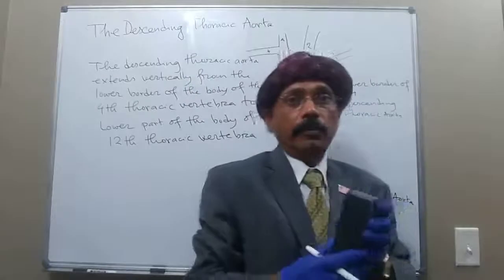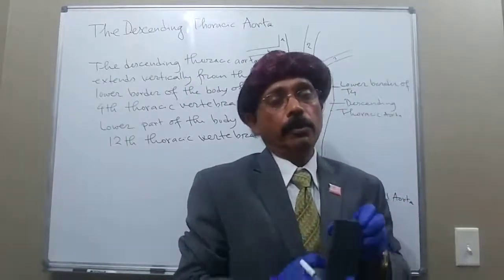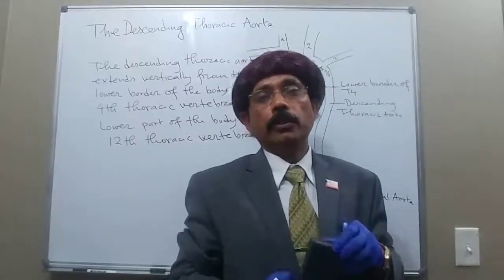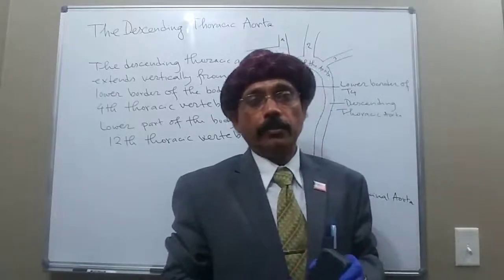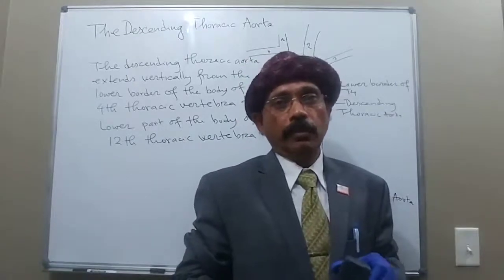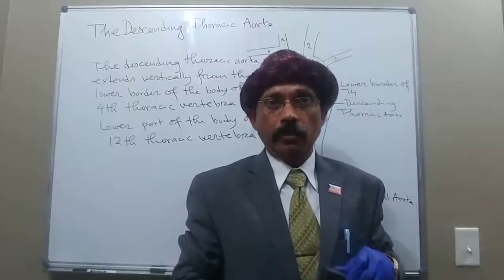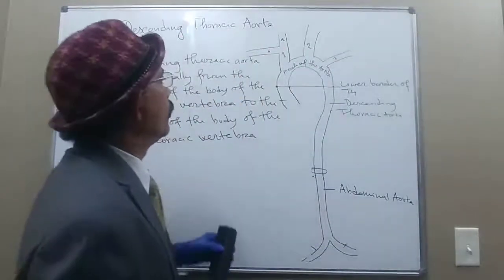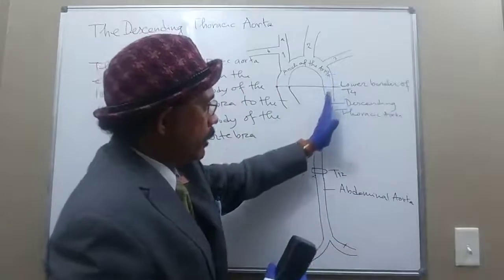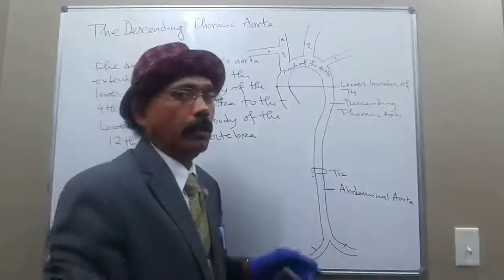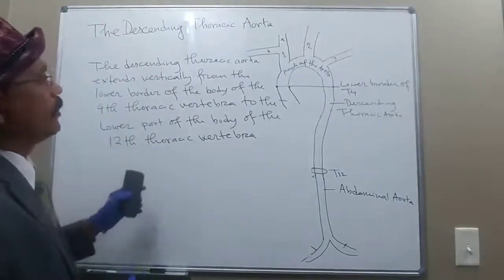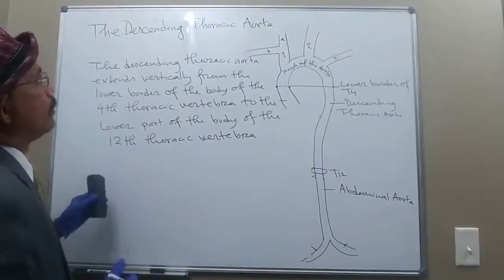This is T4. It begins on the left side of the lower part of T4, with a little bit of right inclination as it descends. It courses vertically but with a slight right inclination, remaining close to the median plane but still a little bit to the left, going from T4 to T12. It ends in front of the lower part of the body of the T12 vertebra, slightly left of the midline.